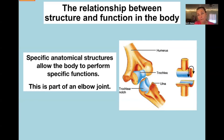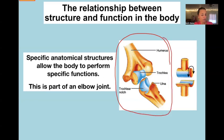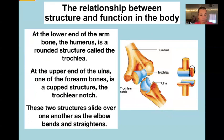If you have something you need to do, you have to have a structure in your body in order to be able to do it — or you can't do it. This picture shows an elbow, or at least part of one. This is an elbow joint.